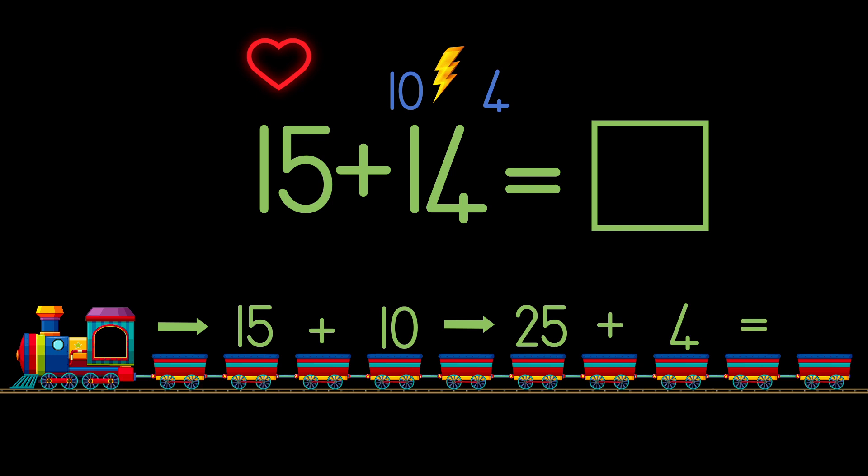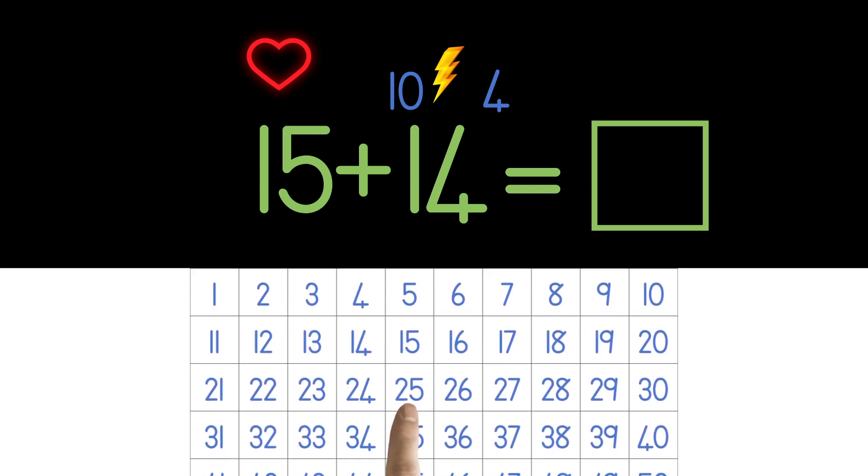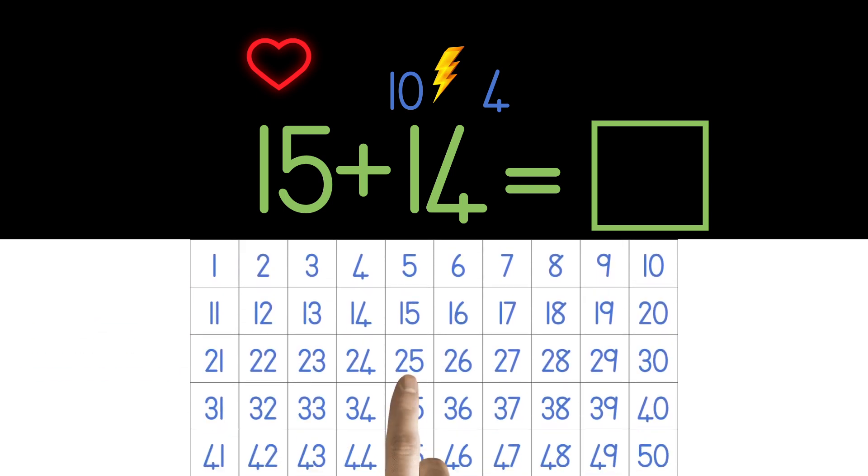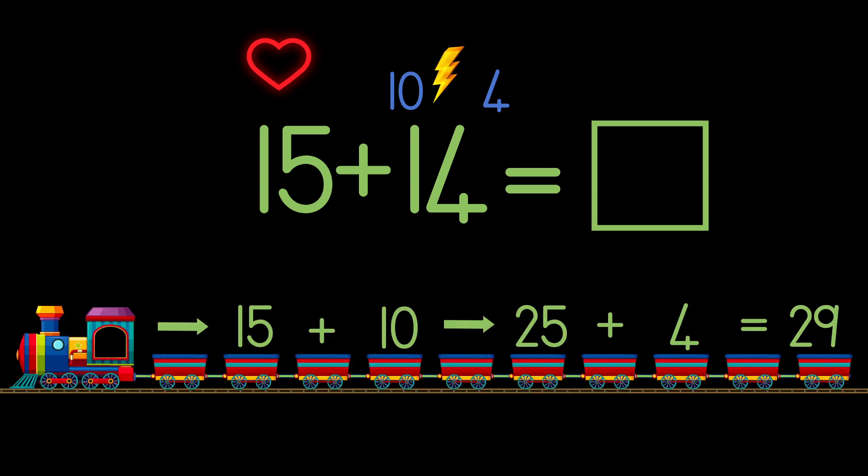If you're not sure you can go back to your chart. Count 4 spaces more than 25 to get the answer. So 25 plus 4 equals 29. Then lastly you can go and write your answer, 29, in the block above to show that you have figured out the answer.